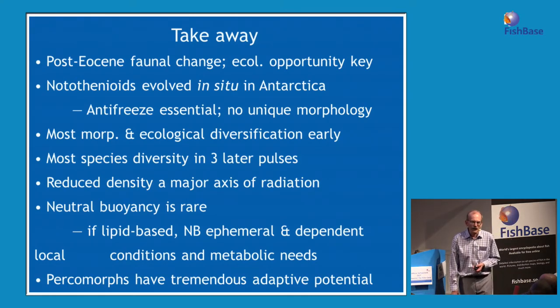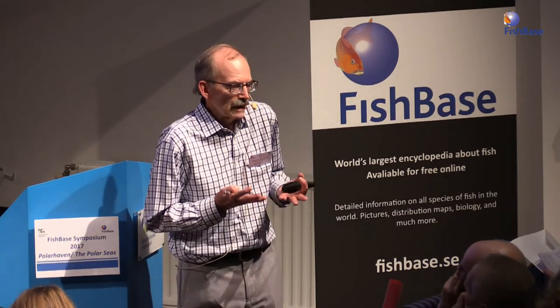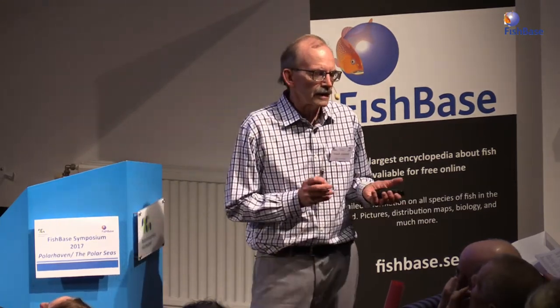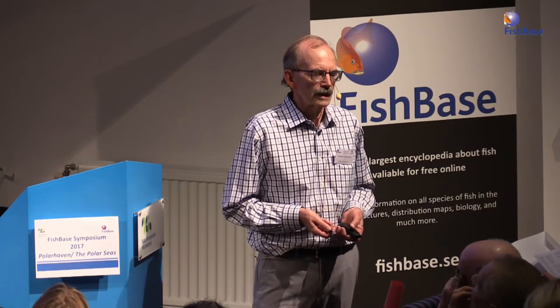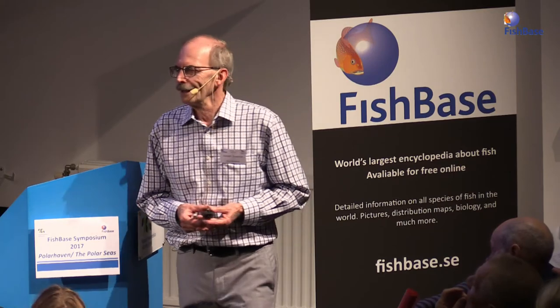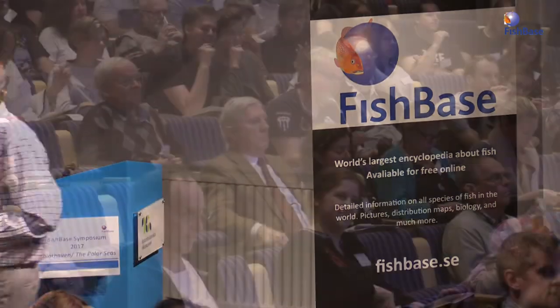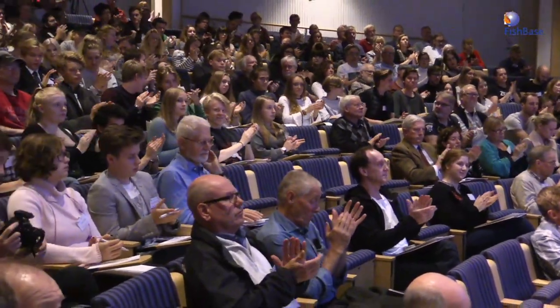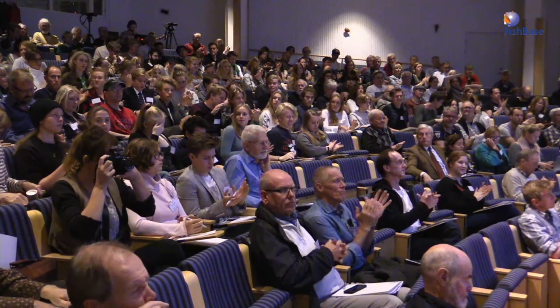So we have an example of faunal change where a diverse fauna over tens of millions of years was replaced by a fauna that was basically a bottom group that managed to fill a number of niches, including neutral buoyancy niches. What this tells me more than anything else is that there's nothing special about notothenioids — it's the sort of percomorph group that has this adaptive capability, which is why 10,000 of the 30,000 species of fish are percomorphs. Thank you.